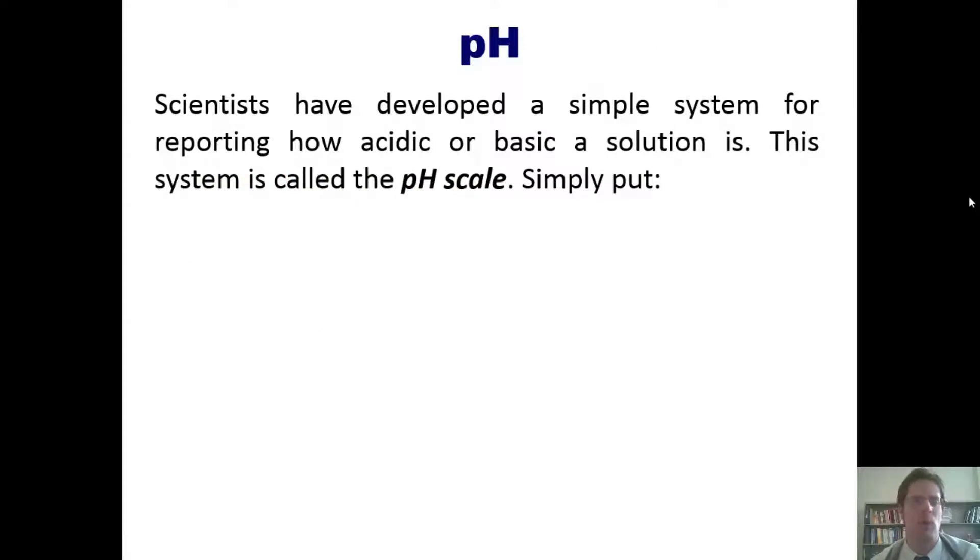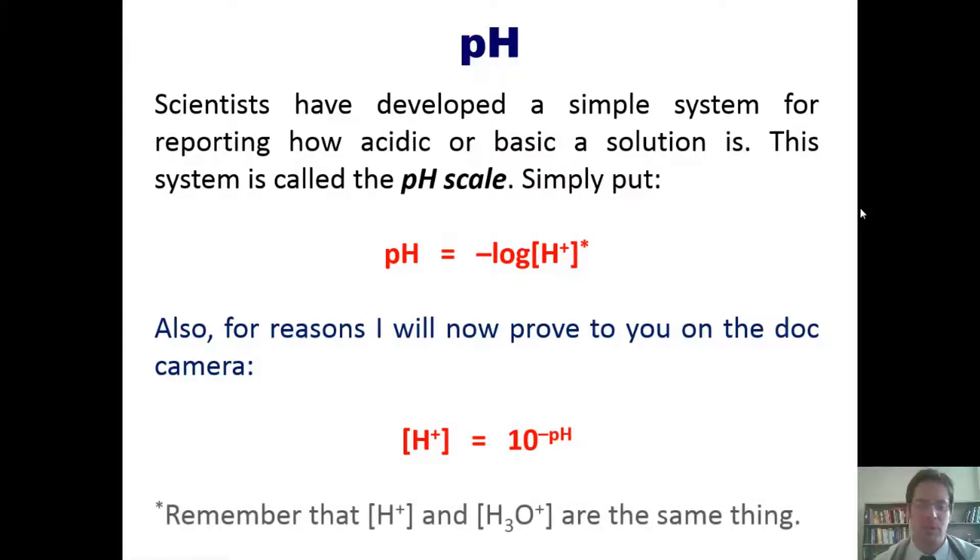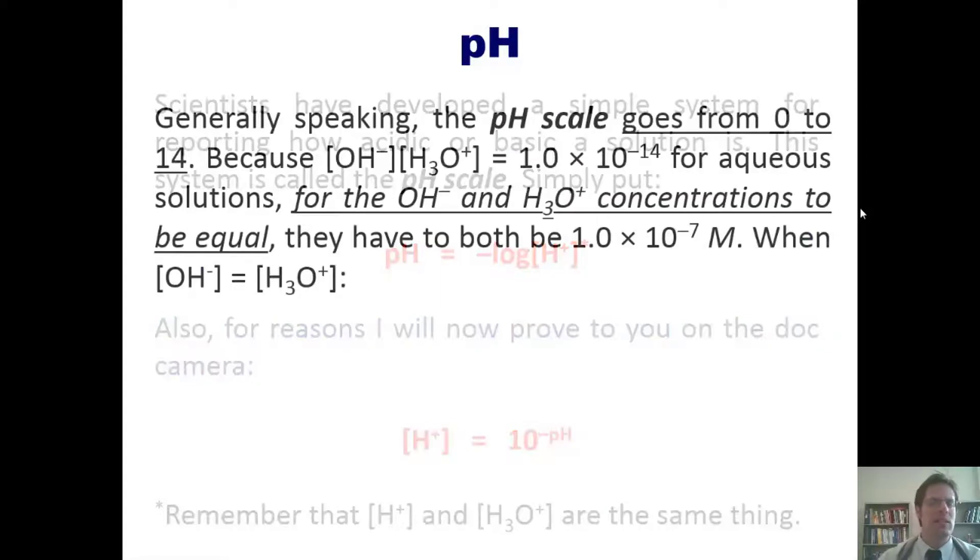Now I'll teach you about pH. Scientists have developed a simple system for reporting how acidic or basic a solution is. This system is called the pH scale. Simply put, pH mathematically is equal to the negative log of H+. Also, for reasons that I will now prove to you on the board, the concentration of H+ is equal to 10 raised to the negative pH.